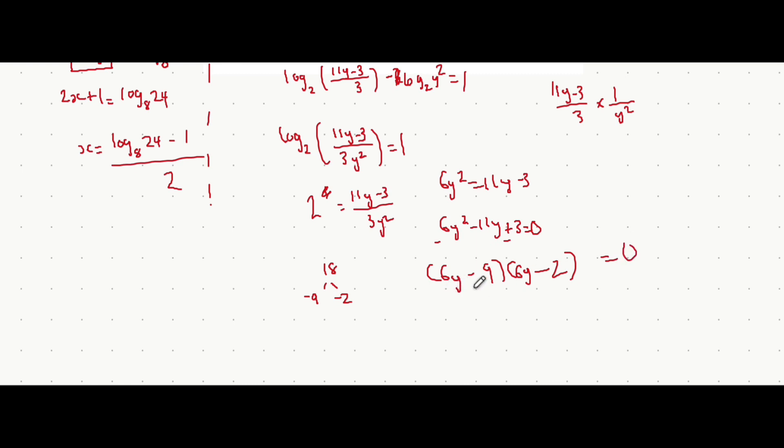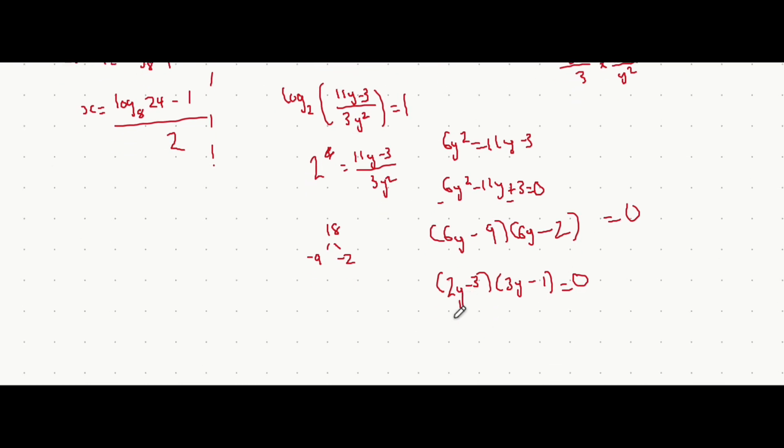In this second bracket, both of these are factors of 2. So you can divide both terms by 2. Now when the first bracket is equal to 0, y is equal to 3 over 2. And when the second bracket is equal to 0, y is equal to a third.